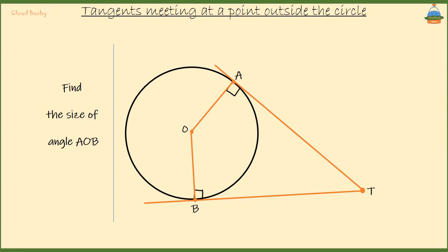Now, AOBT is a quadrilateral. However, its internal angles should add up to 360 degrees. Now, since 90 plus 90 is 180 degrees,